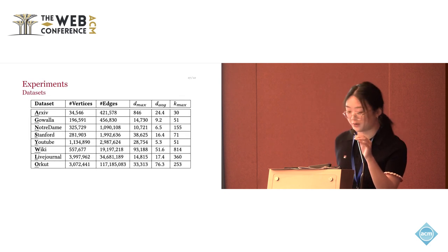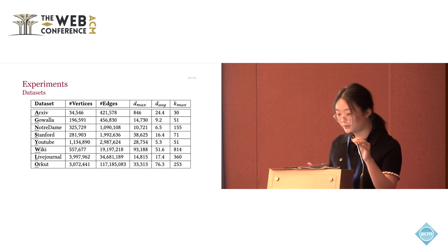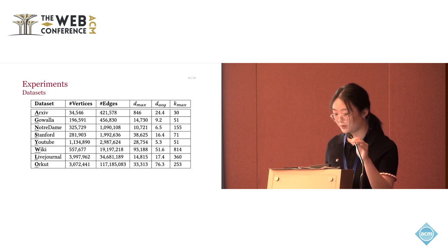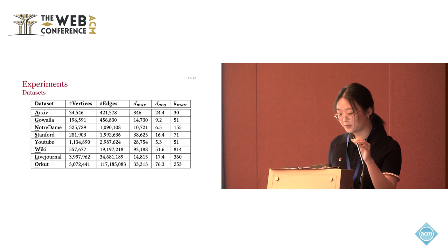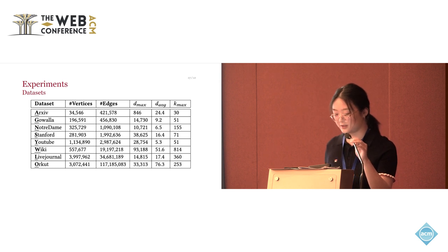In this table, we listed our datasets where our experiments conducted on. The DMAX refers to the maximum degree of the graph. The DAVG refers to the average degree of the graph. The KMAX refers to the maximum coreness in the graph. We can see that the largest dataset we use, the Orkut, has over 3 million vertices and more than 100 million edges.